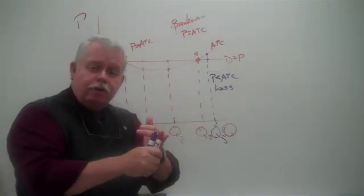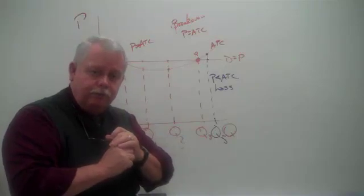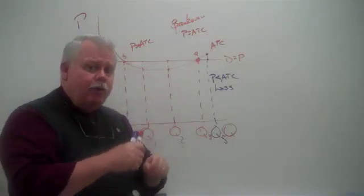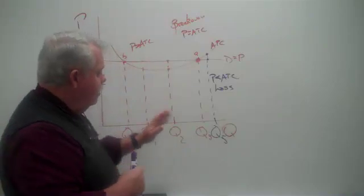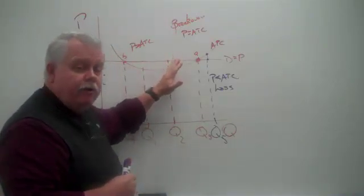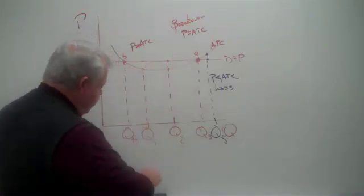So again, you look at marginal cost and marginal revenue, find their intersection. At that level of output, what I call point alpha, at that level of output, what is their price compared to their average total cost?